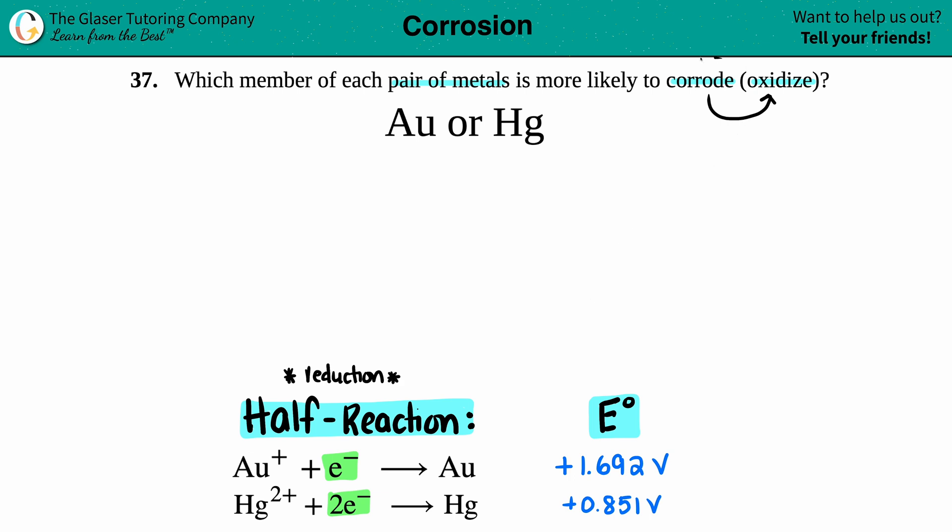But in this case, when we're talking about corrosion, we want the oxidation form. So the thing here is that since they're always going to be in reduction form, standard in the back of a textbook, the higher the value,